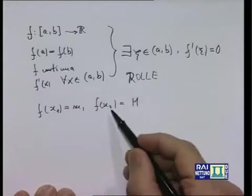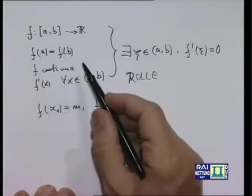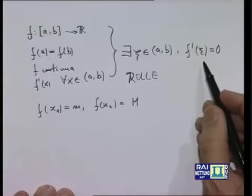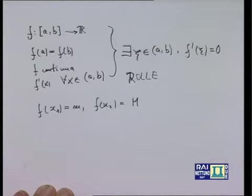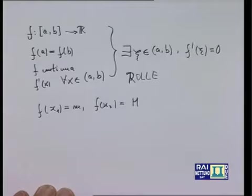Ora, è mai possibile che questi due punti x₁ e x₂ coincidano con gli estremi — x₁ stia in a, x₂ in b o viceversa? Certamente questo è possibile, ma in un caso estremamente particolare: se il massimo coincide con il minimo, dato che la funzione assume valori uguali in a e in b, questo vorrebbe dire che m piccolo uguale a M grande, dunque la funzione è costante. In tal caso la derivata prima è nulla in tutti i punti, e il teorema è abbondantemente verificato.